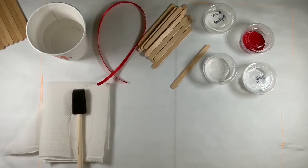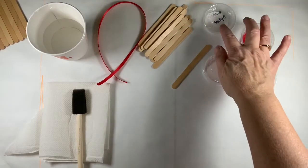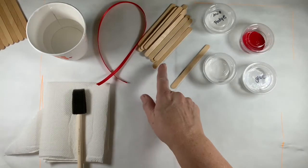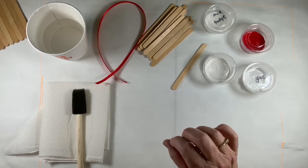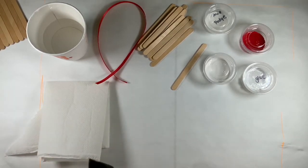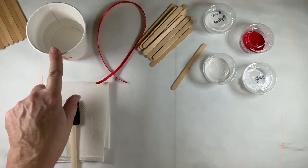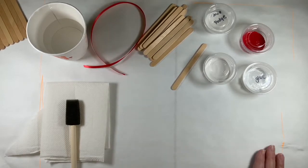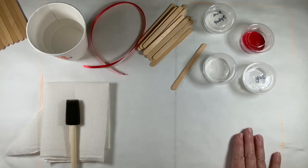So without further ado, here's the tutorial for how to make this craft. We have all the supplies that are in the bag: we got the glue, we got the mod podge, we have the white paint, the red paint, the sticks, an extra stick for the glue, and we have a sponge brush and we have paper towel and a cup of water and we have some ribbon.